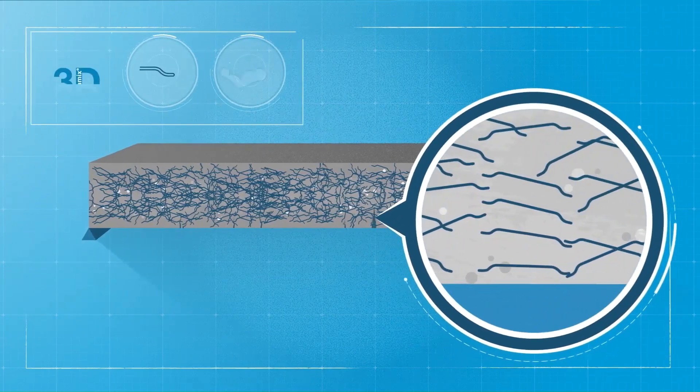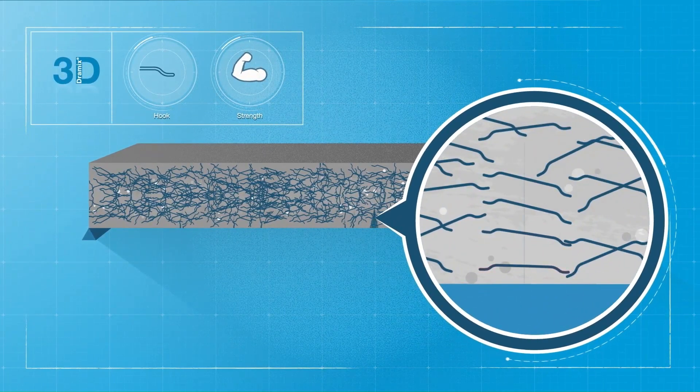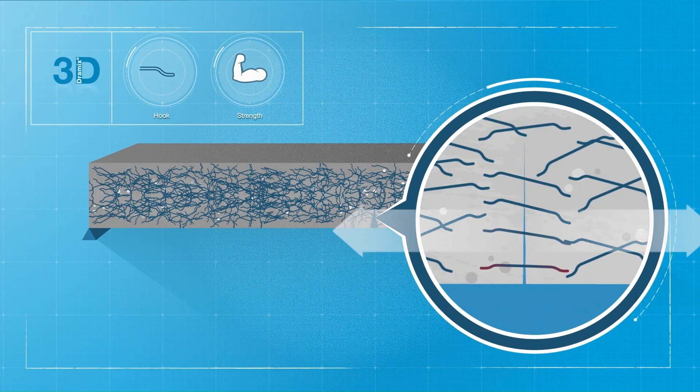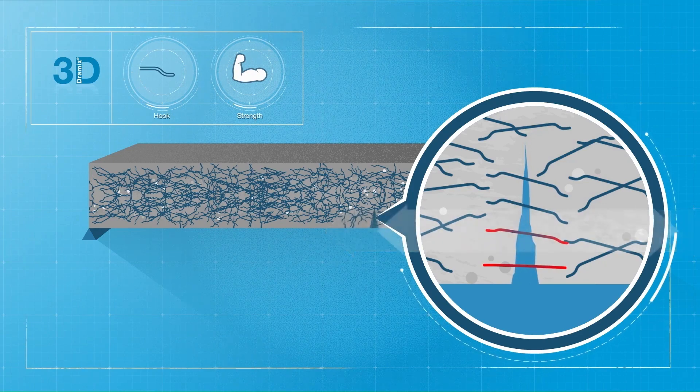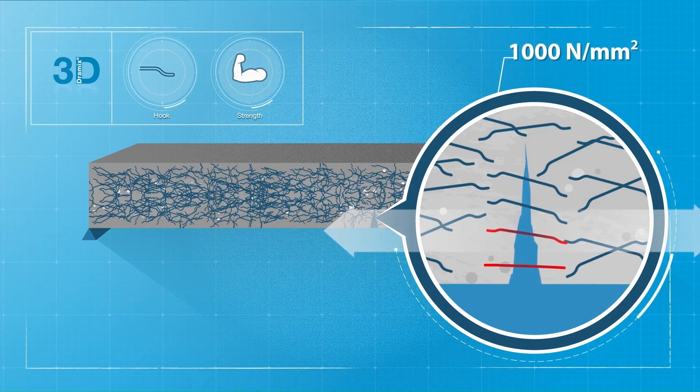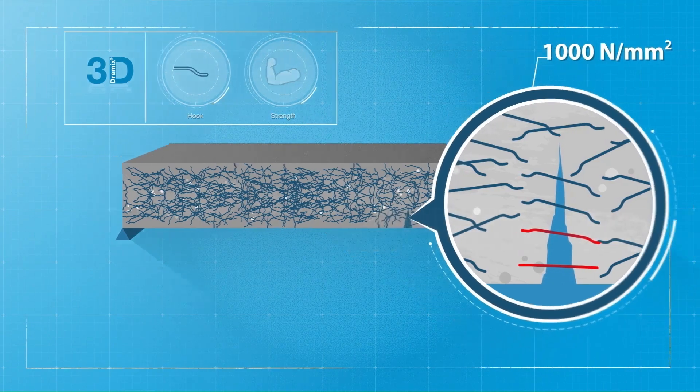First up is Dramex 3D. When a small crack occurs, the 3D hooks firmly anchor inside the concrete matrix. As the stress increases, the hook slowly deforms. As soon as the fiber loses its bond with the concrete, the pullout takes full effect.